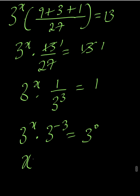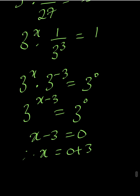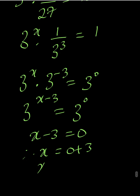We can add their powers since it is multiplication. It becomes 3 to the power of x minus 3, equal to 3 to the power of 0. Their bases are the same, so we equate their powers: x minus 3 equals 0. Therefore x equals 0 plus 3, which gives x equal to 3. So this is the value of x that satisfies this equation.